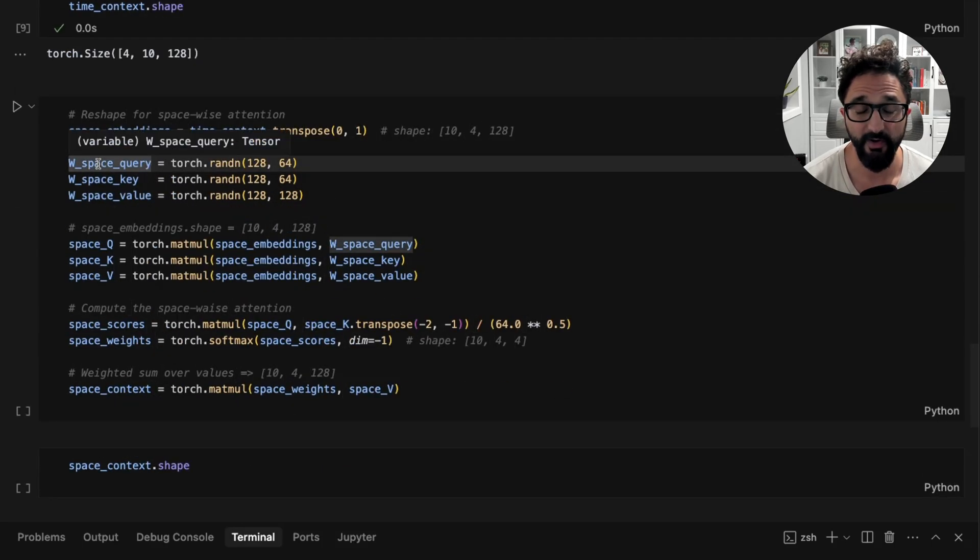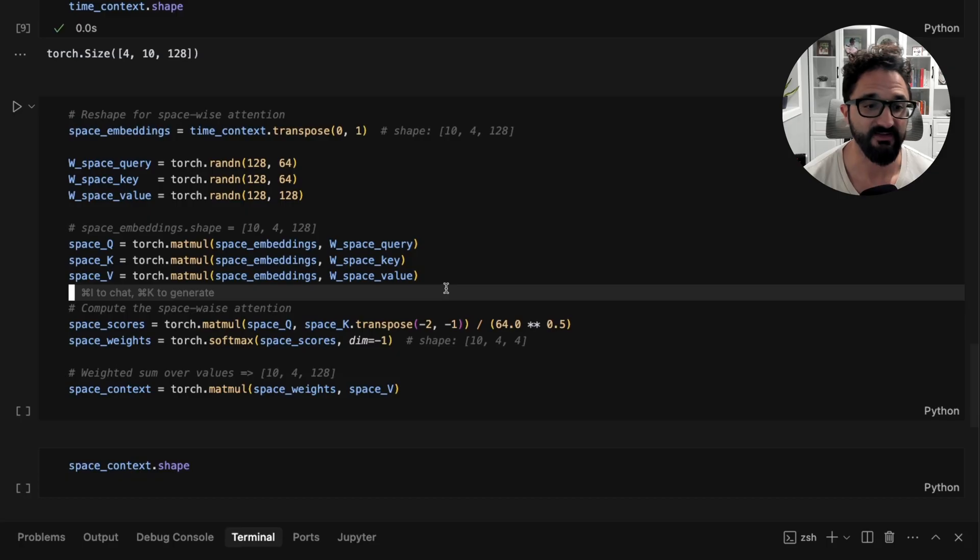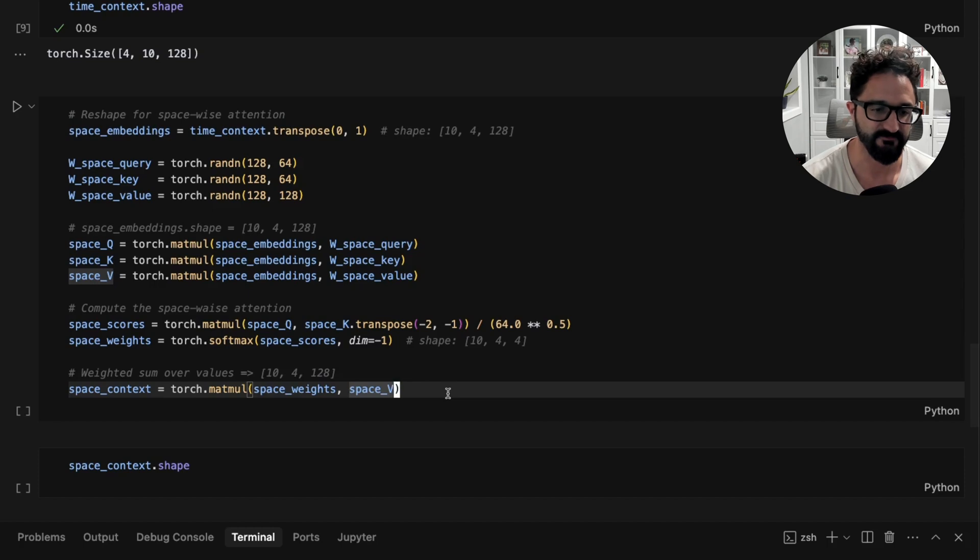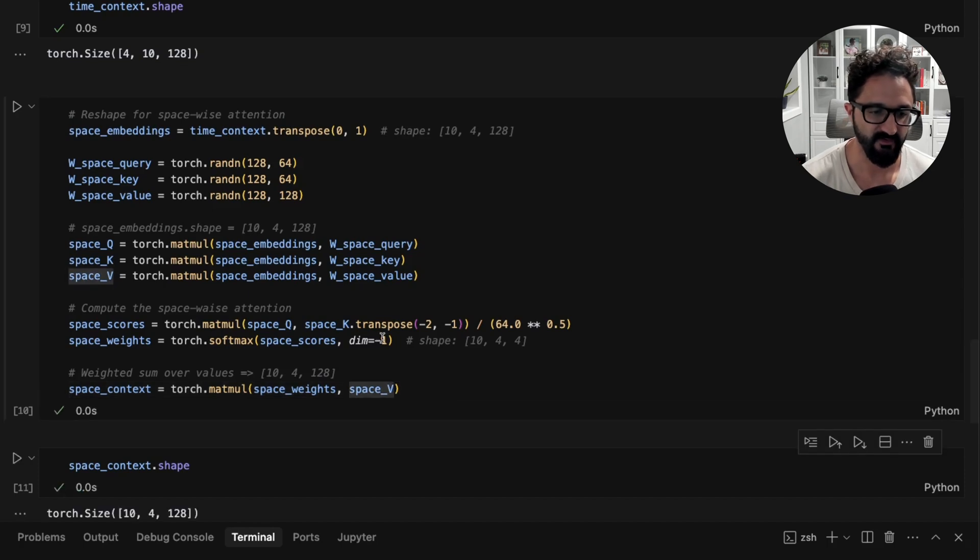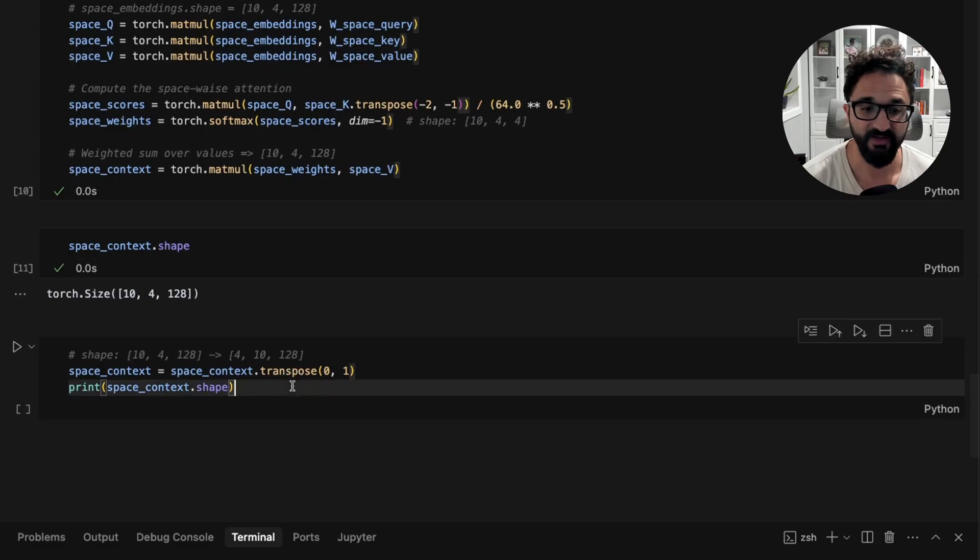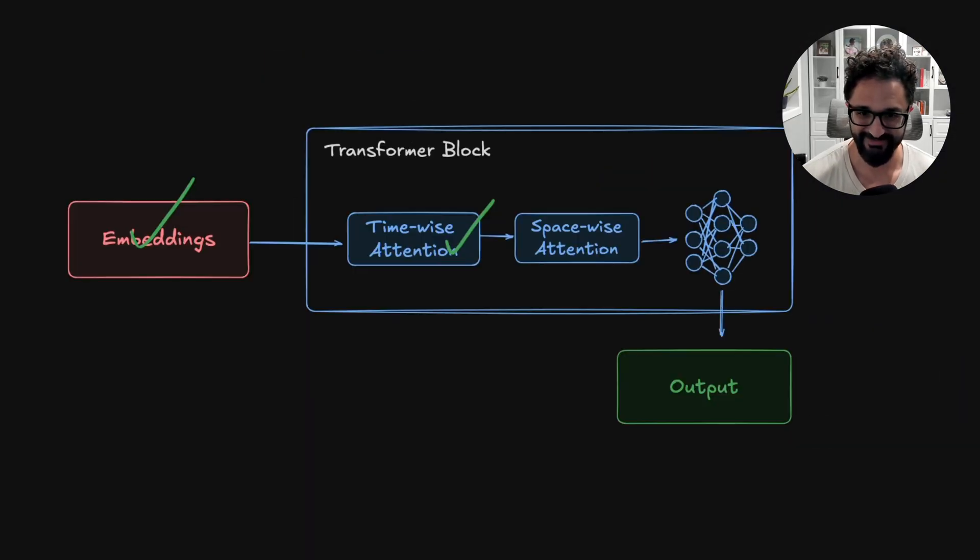We do that here with this transpose to reshape it, and then the attention process is exactly the same. We have different query, key, and value matrices, though, that will be learned for this spacewise attention block. But we compute the query, key, and spacewise vectors for every token. We do our attention scores, and we get our context. Now our output is this 10, 4, 128, which we can reshape back to the 4, 10, 128 to pass it through to the next layer in our transformer block. And so that is the spacewise attention. Again, there's normalization steps. We can repeat these blocks and we have our feedforward networks, and then we're getting our output.